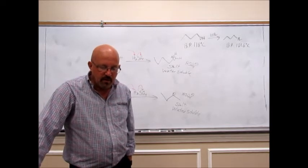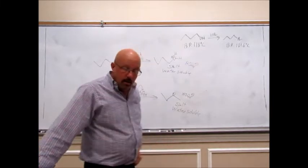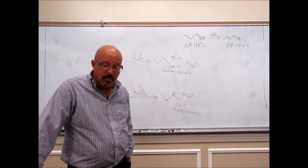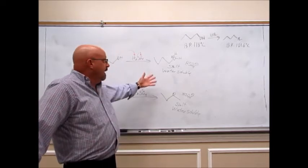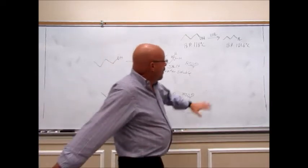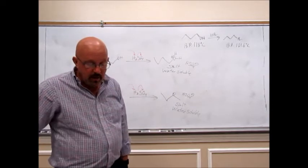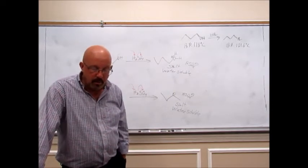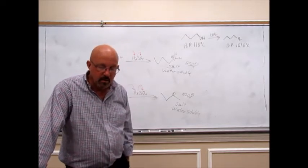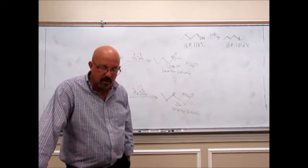Separate the layers, then wash the organic layer — the 1-bromobutane — with 1 mL of 3M sodium hydroxide. The purpose is just to get rid of any acid that may still be around; we don't want any acid in with our product. Then take the bromobutane layer, which will be the bottom layer, put it into a new reaction tube, and dry it over anhydrous calcium chloride pellets.